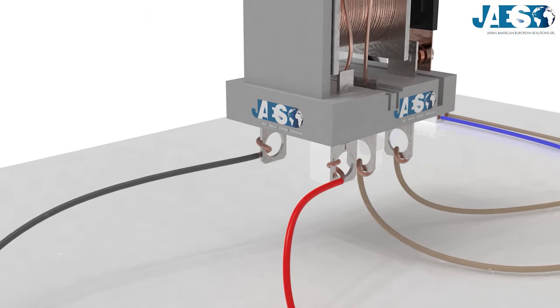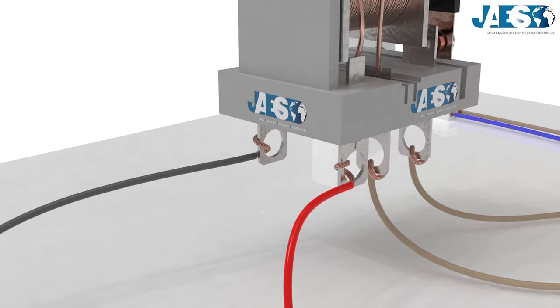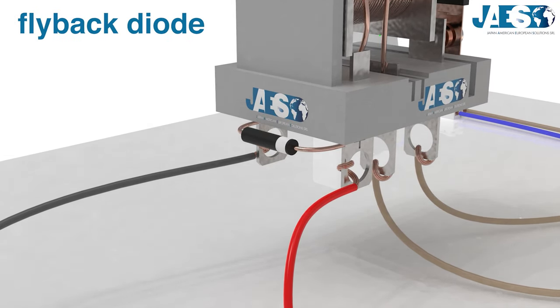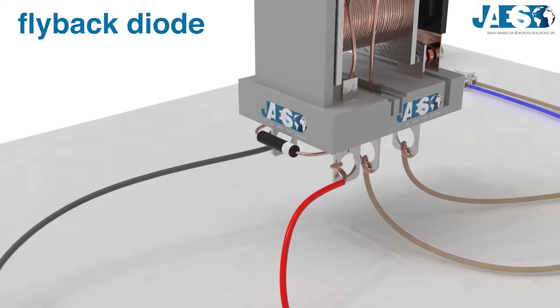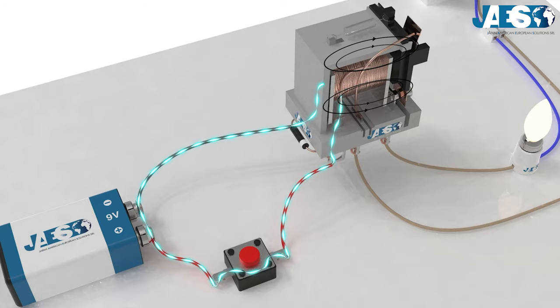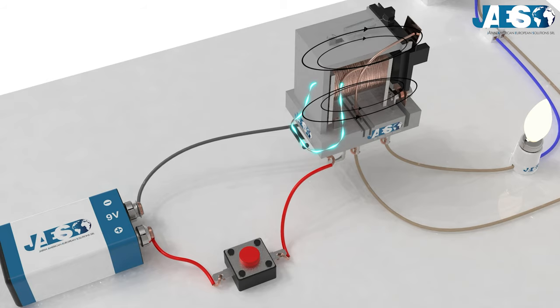Very important for the protection of the components and the current operation of the relay is the presence of a flyback diode. The moment the switch opens and the circuit is interrupted, the relay inductance will try to hold the current. Adding a diode to the circuit will create an easy path for its current to circulate until it is depleted.